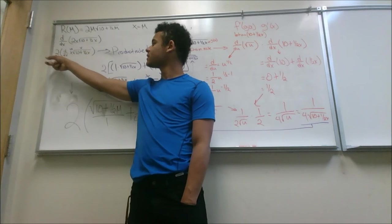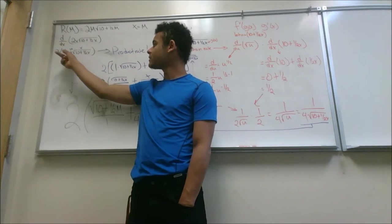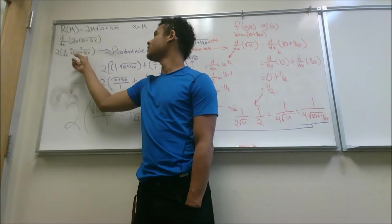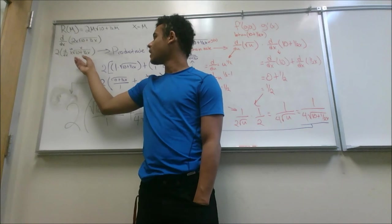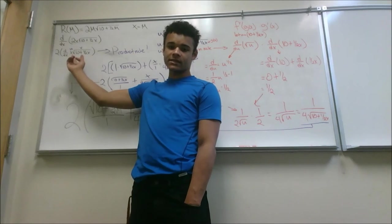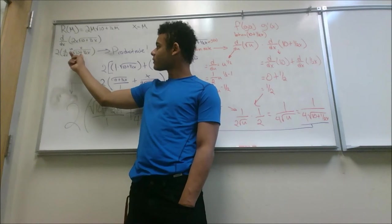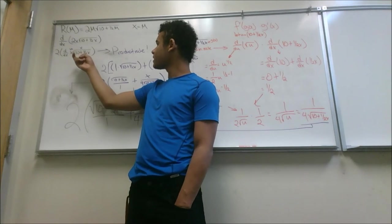Immediately, you can take out your constant. So that'll be 2 times D over DX of X times the square root of 10 plus 1 half X. We recognize here that product rule is needed. So X will be U and the square root of 10 plus 1 half X will be V.